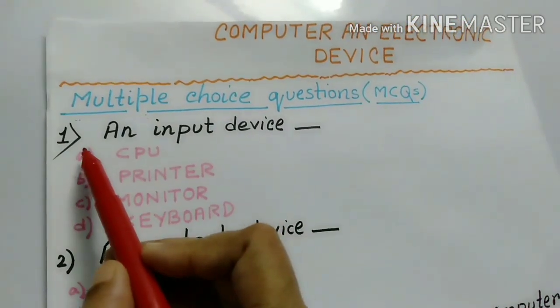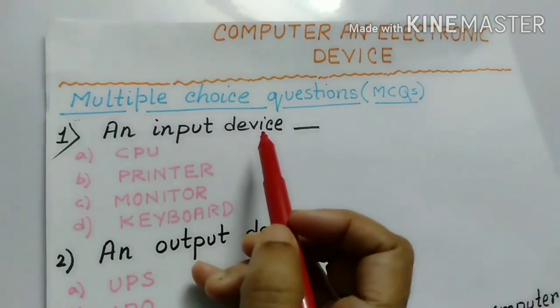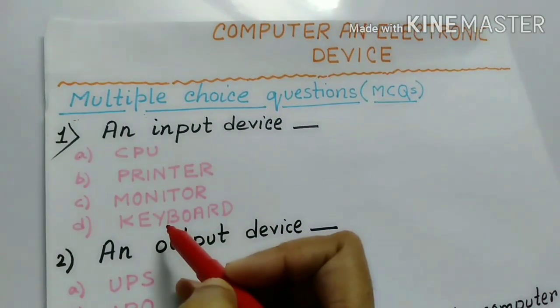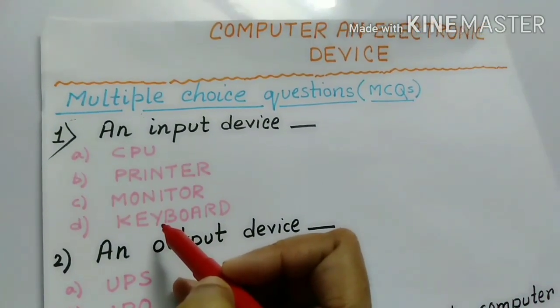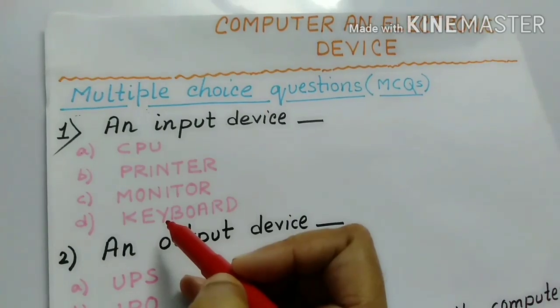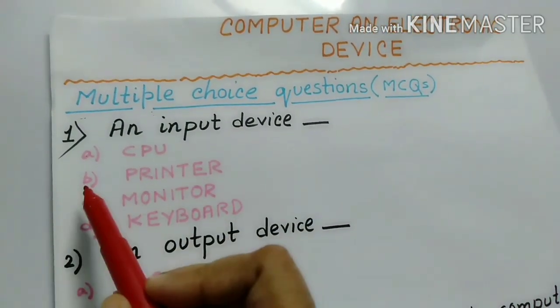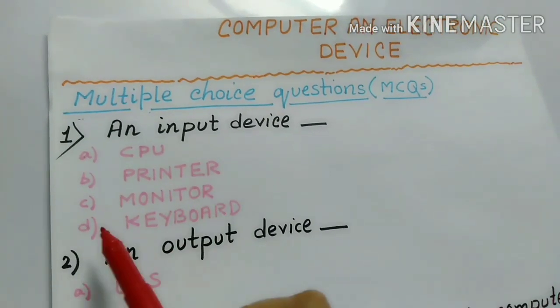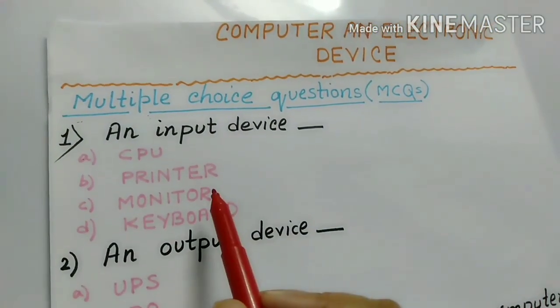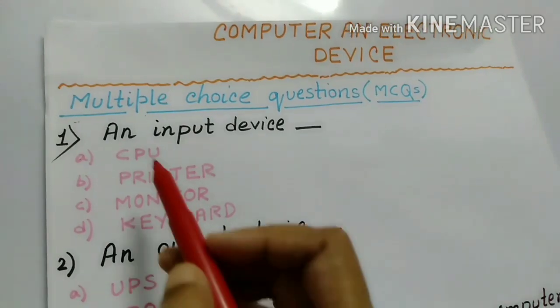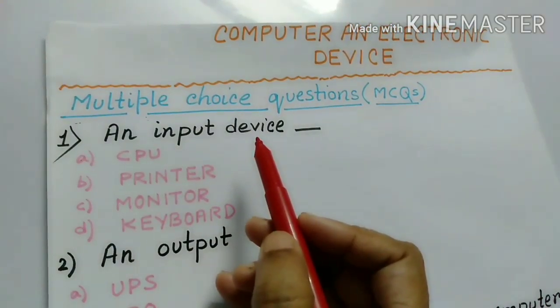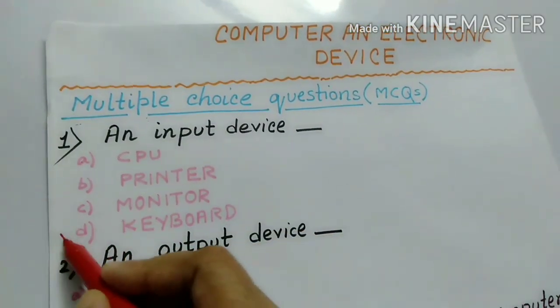Number 1. An input device. Four options are given here. You have to choose the right one. So what are the options? Number A, CPU, Number B, Printer, Number C, Monitor, Number D, Keyboard. Now which one is the input device? Keyboard.